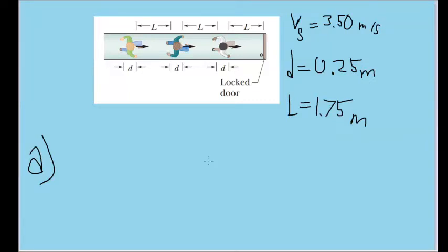In this situation, we have some panicked people running toward a door to escape a fire. The speed of each individual is 3.5 meters per second, the depth of each person, D, is 0.25 meters, and the distance between each person is 1.75 meters.